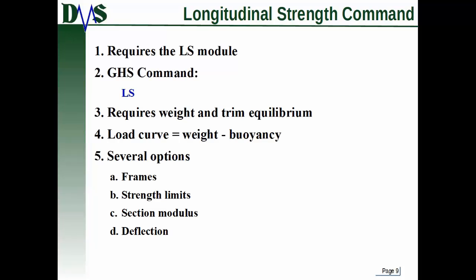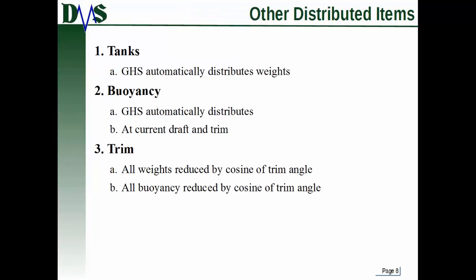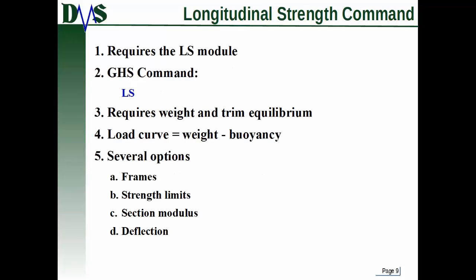So it's basically accounting for the fact that gravity is no longer pointing straight down if your vessel has a trim on it. So let's say you've gone through, you've set everything up. You've done all of these distributed weights. You've set up a loading condition with your tanks. Now you actually want to do the longitudinal strength analysis. To do that, you need the longitudinal strength command. This isn't part of the most basic GHS. This requires the LS module. So make sure you have that in your license options. But once you have that, and once you've set up everything, this is actually a very simple command.